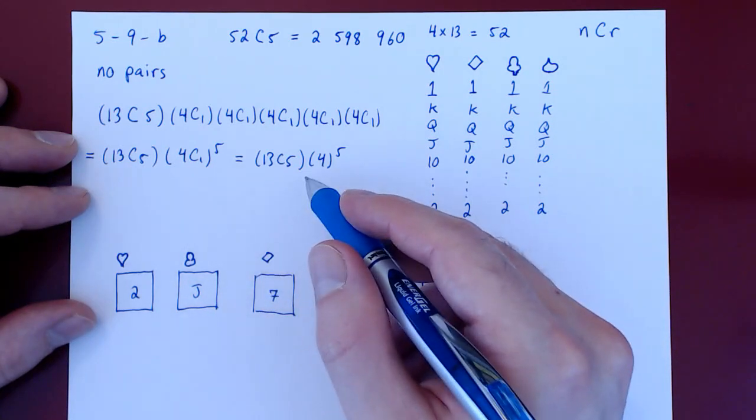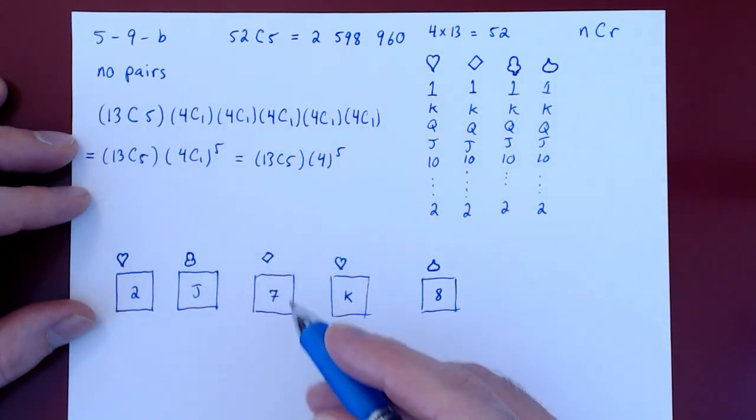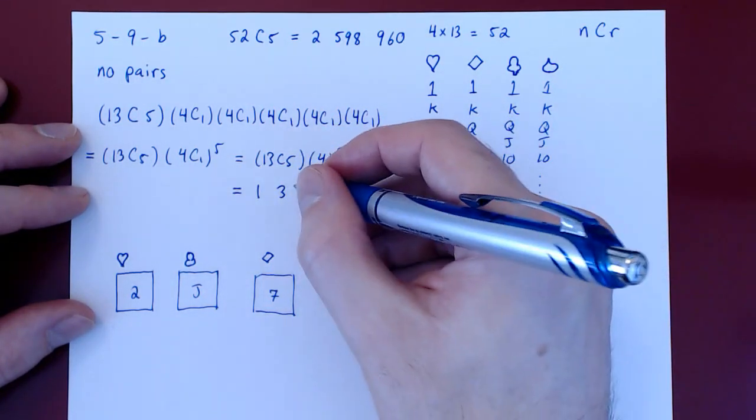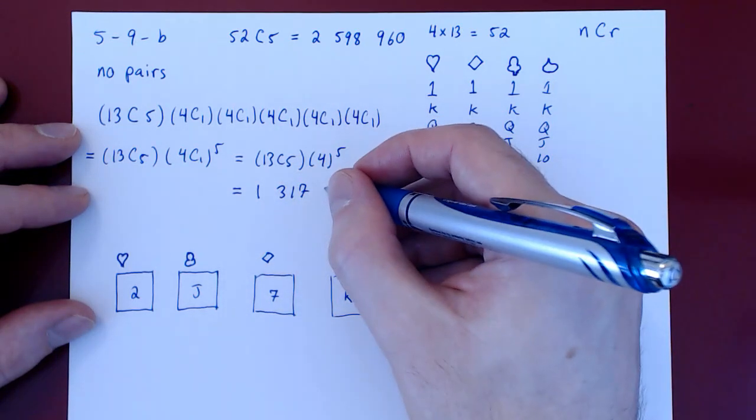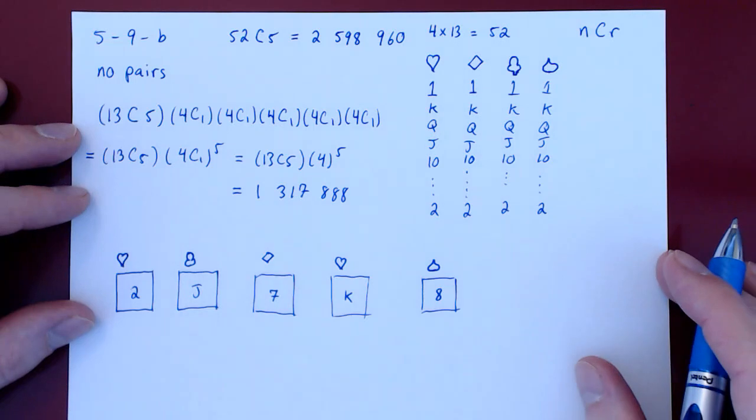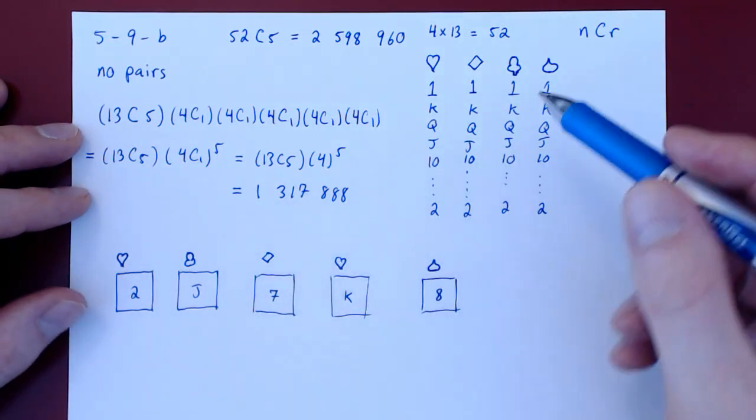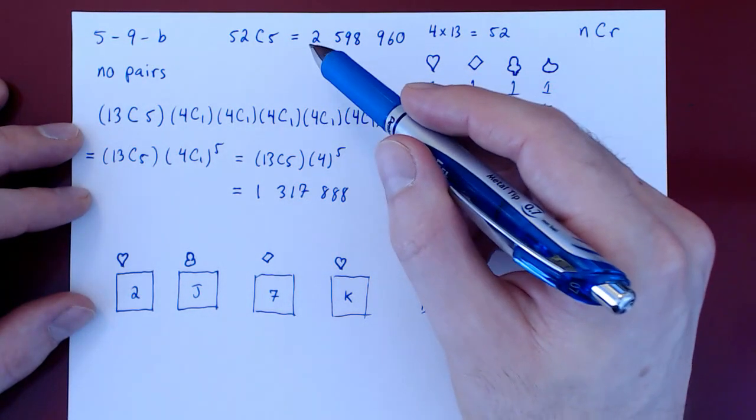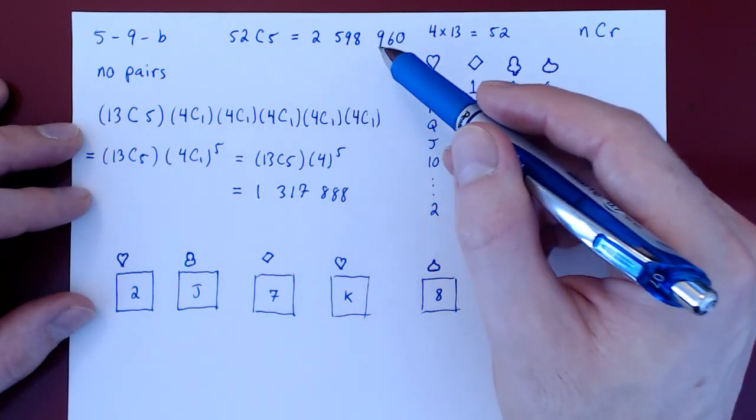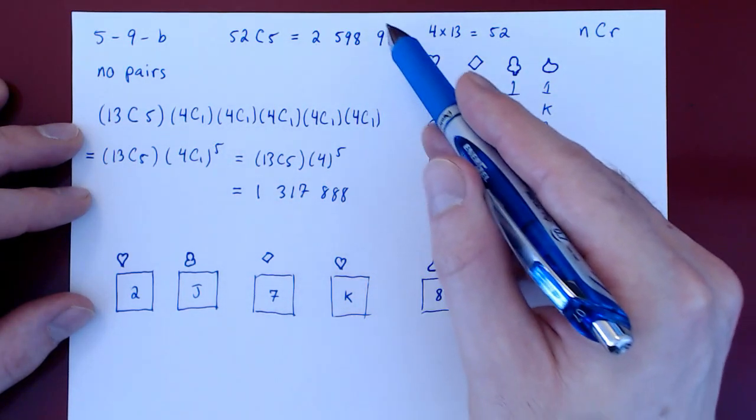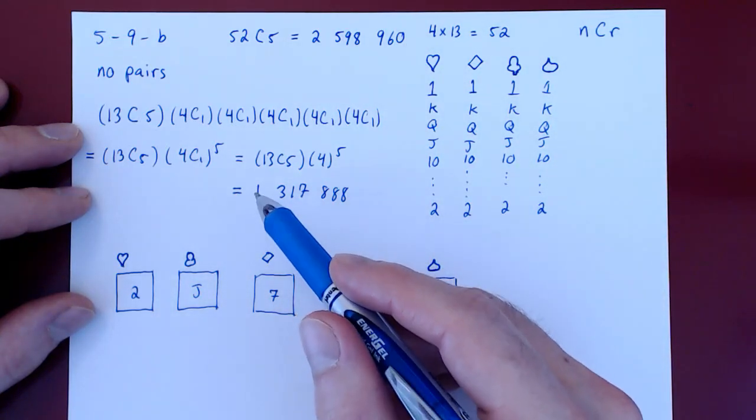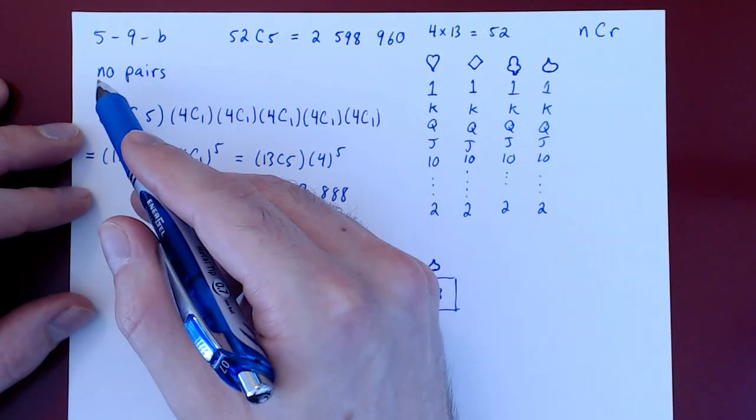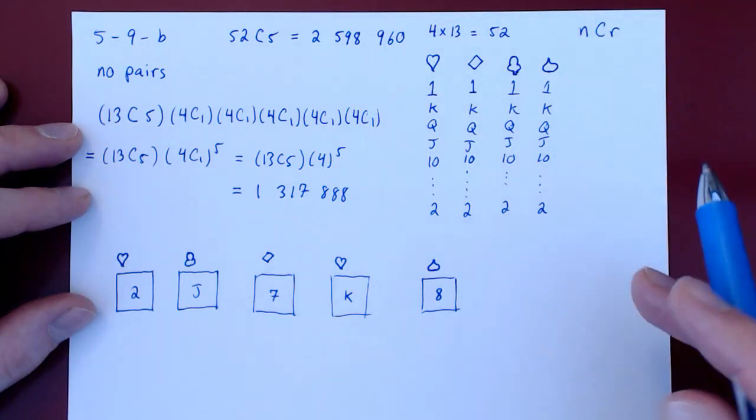If you use your calculator to calculate 13 choose 5 times 4 to the 5, you will obtain 1,317,888. Pretty large number. So out of a total of 2,598,960 possible hands of five cards, exactly 1,317,888 consists of no pairs or anything stronger.